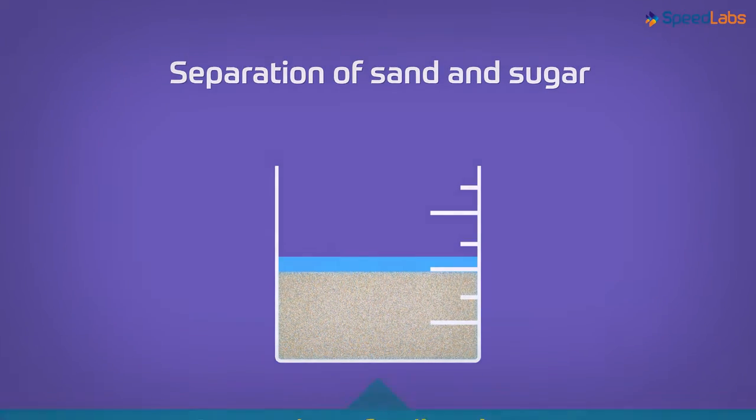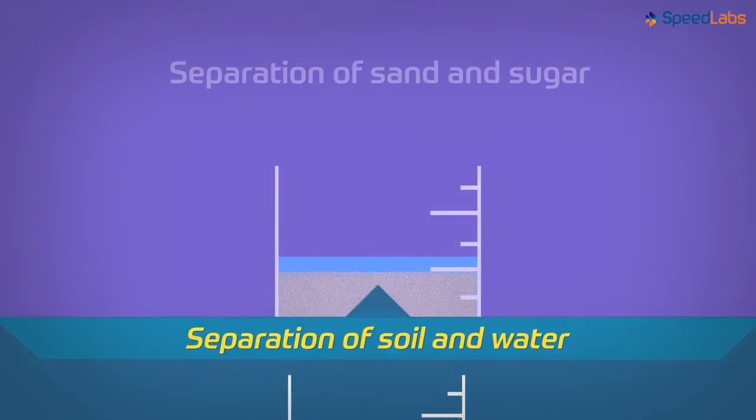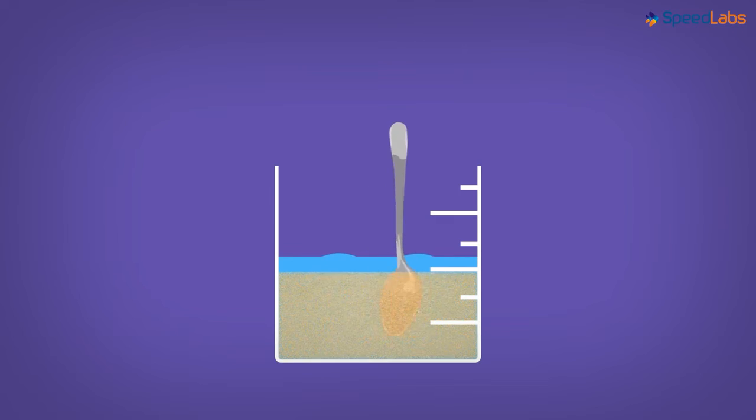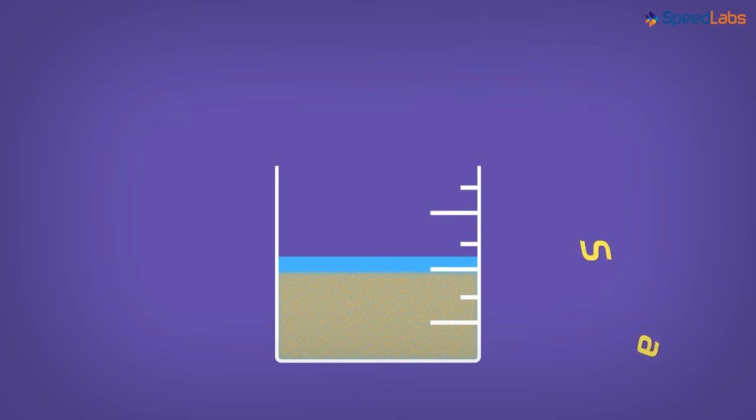That would lead to separation of sand and sugar. And we already know how to separate soil and water. So to begin with, we add water to the sand and sugar mixture and stir it well. And how much water should be added? It should be enough to dissolve all the sugar.